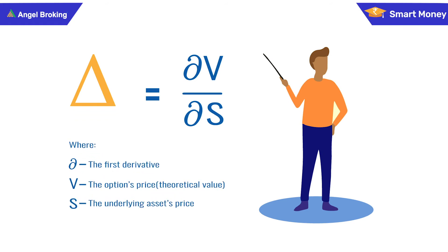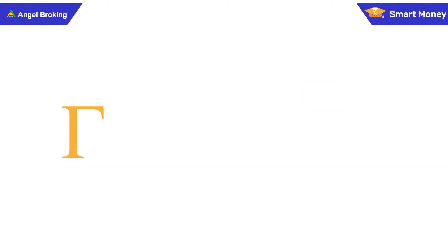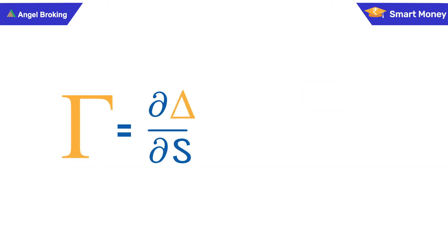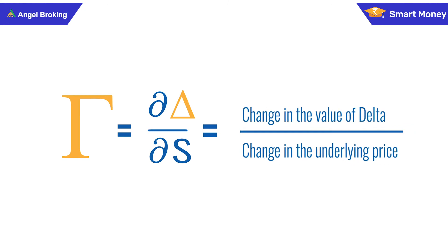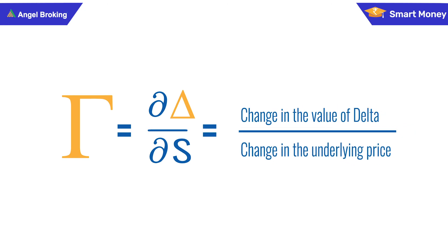Delta is a derivative of option price and is thus known as the first order derivative. Delta of an option is a variable and changes for every change in the underlying and premium. Gamma is the derivative of delta and hence is known as the second order derivative.